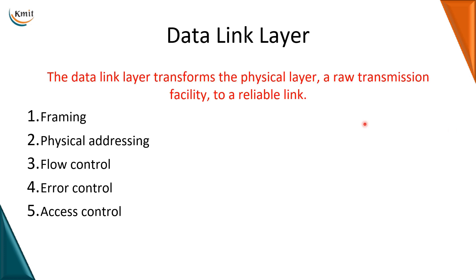Our next layer is the data link layer. The data link layer transforms the raw transmission facility received from the physical layer into a reliable link — meaning it makes the bit stream into an error-free bit stream. Other responsibilities of the data link layer are framing, physical addressing, flow control, error control, and access control.